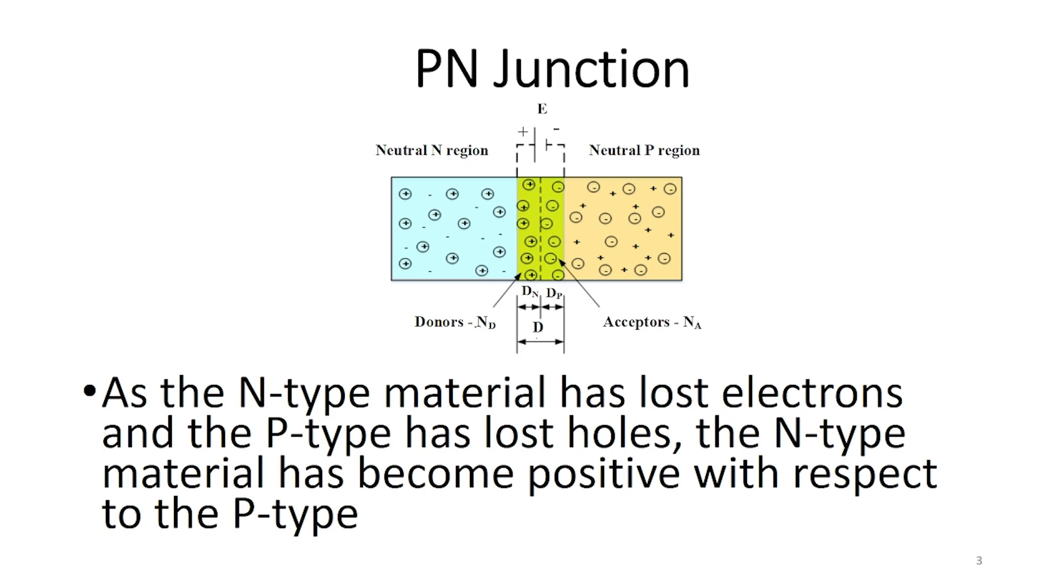As the n-type material has lost electrons and the p-type has lost holes, the n-type material has become positive with respect to the p-type.